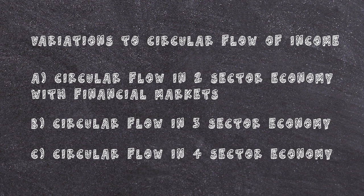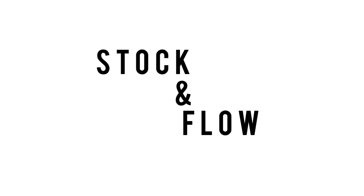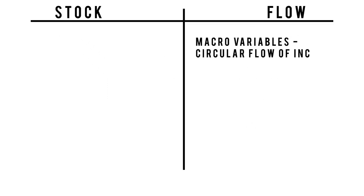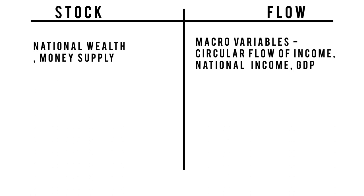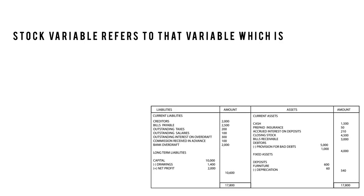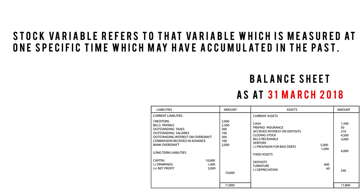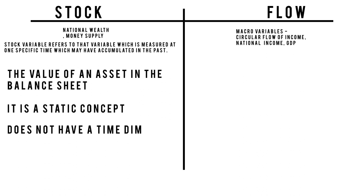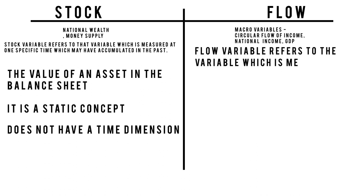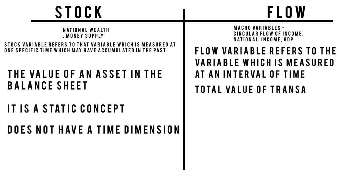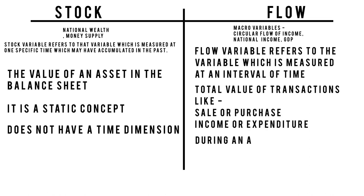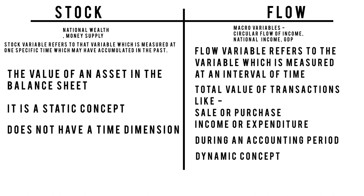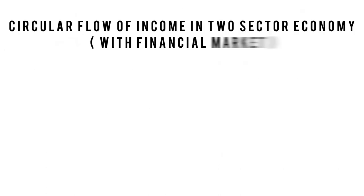Before proceeding with variants of circular flow, let's understand the concept of stock and flow — recurring terminologies in macroeconomics. Macroeconomic variables such as circular flow, national income, and GDP are flow concepts, while national wealth and money supply are stock concepts. A stock variable is measured at one specific point in time and may have accumulated in the past — it is a static concept with no time dimension. A flow variable is measured over an interval of time, such as total value of transactions, income, or expenditure during an accounting period — it is a dynamic concept with a start and end time.